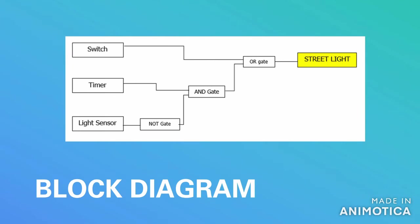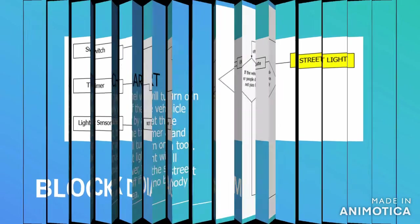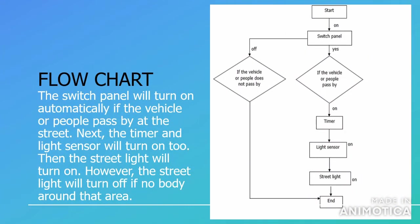This is how the block diagram for the streetlight looks. This project represents the operation of a streetlight. The switch panel will turn on automatically if a vehicle or people pass by at the street. Next, the timer and light sensor will turn on too. Then the streetlight will turn on. However, the streetlight will turn off if nobody is around that area.